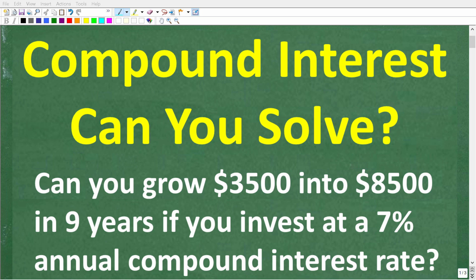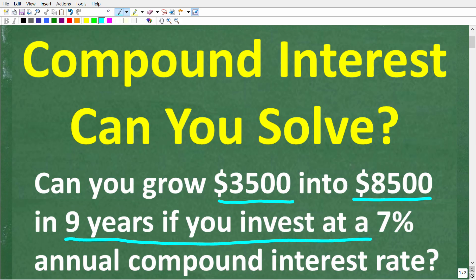If someone told you you can grow $3,500 into $8,500 in nine years if you invest at a 7% annual compound interest rate, would you believe them? Well, this is what this problem is all about.